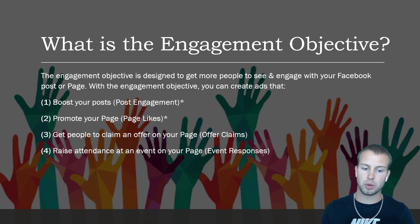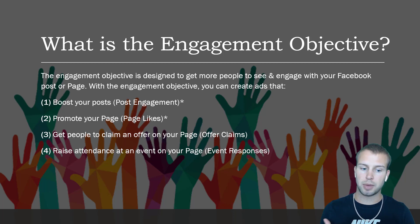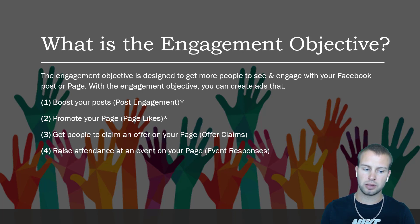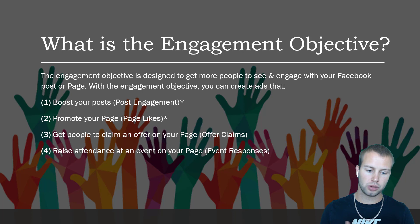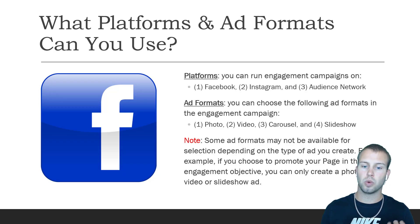Number two: promote your page — page likes. This is the objective you use if you want to run a page likes campaign to warm up your ad account, and these are the two I mostly use the engagement objective for. Number three: get people to claim an offer on your page — offer claims. And number four: raise attendance at an event on your page — event responses. So what platforms and ad formats can you use with the engagement objective?